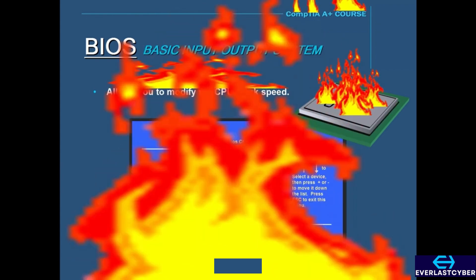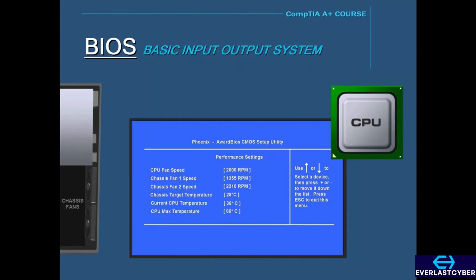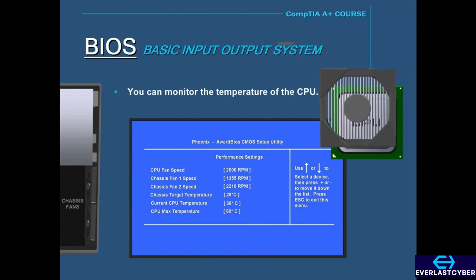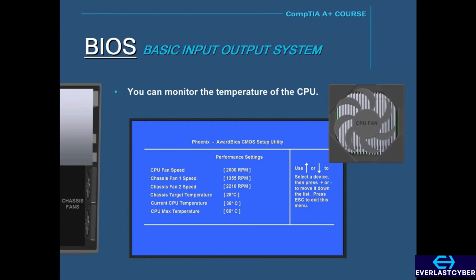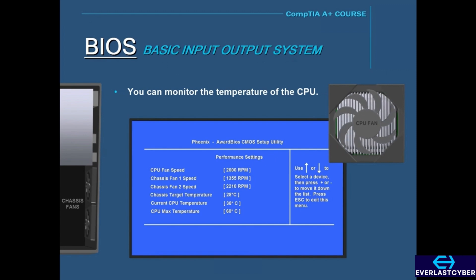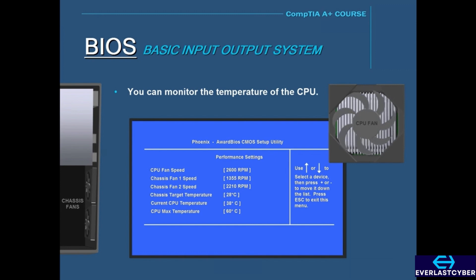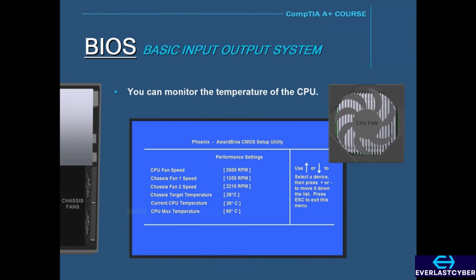The BIOS can also monitor the temperature of the CPU. The BIOS has a built-in safety mechanism that, if the CPU reaches a certain temperature threshold, will automatically shut down the computer. Or, if it detects that the CPU fan is not spinning, it will also shut down the computer to prevent damage from overheating. These temperature thresholds can be modified in the BIOS by either increasing or decreasing them.